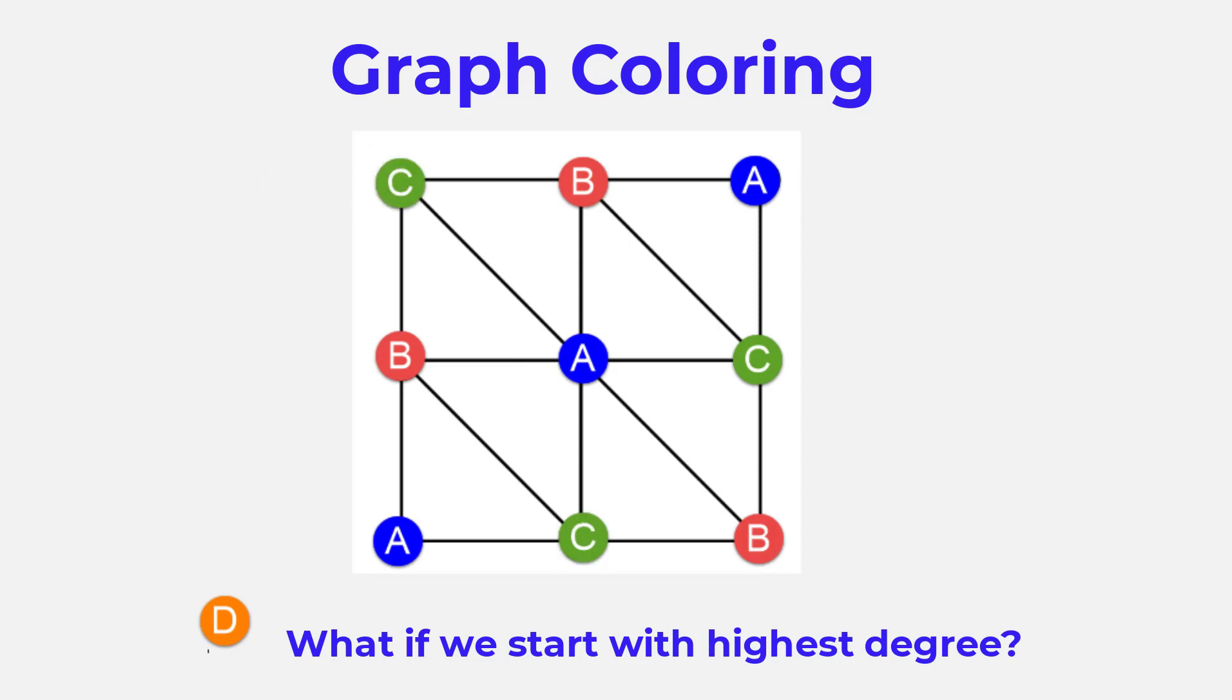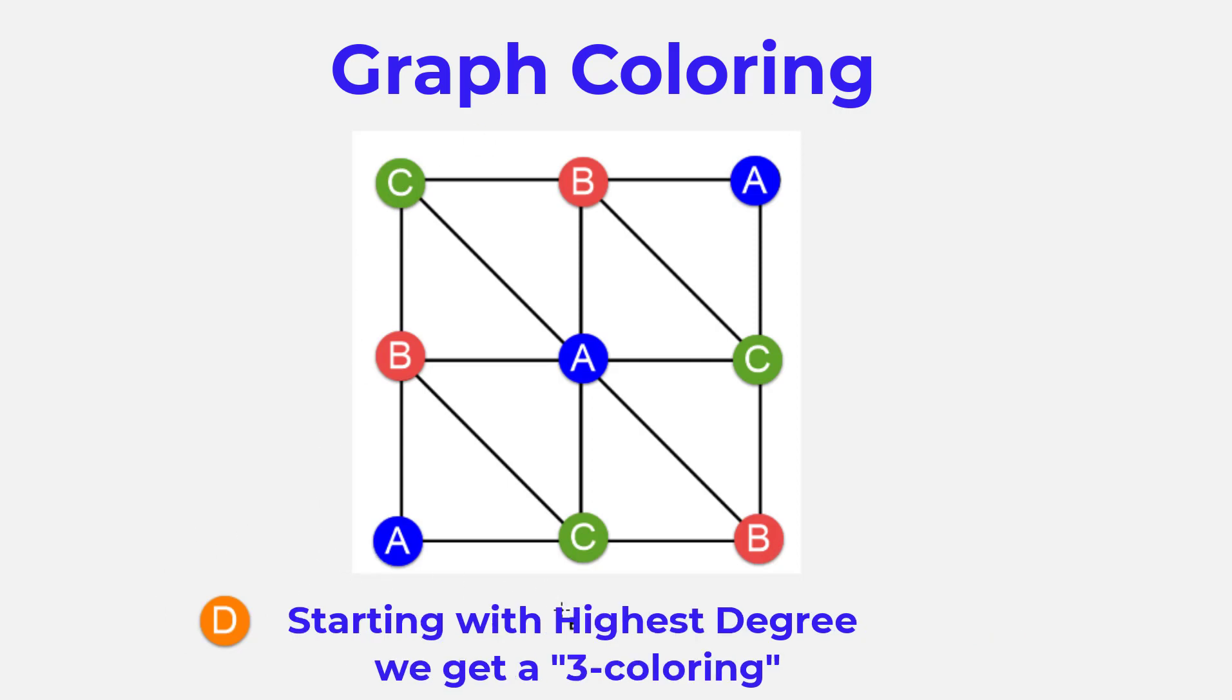So there's no need to use a fourth color here. This is often, not always, but often what happens: we get a better coloring in the sense that we can use fewer colors when we start by coloring the one that's connected to the most other vertices first. We're not left in the end with this problem child who we have to throw in an extra color for.